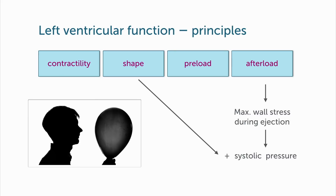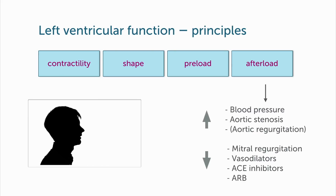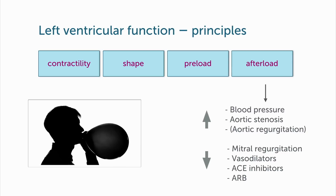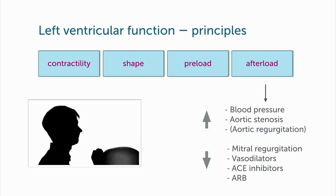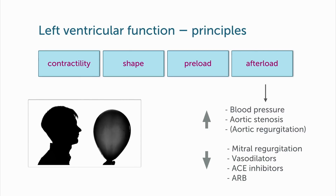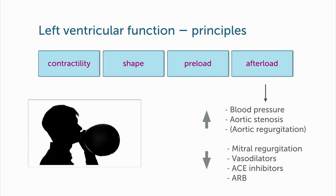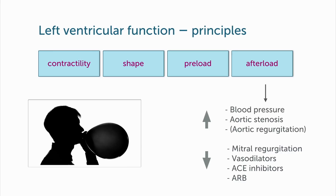Afterload is also influenced by systolic blood pressure. For example, if you have a patient who is hypertensive, then the afterload is increased. The same is true for patients who have aortic stenosis, and even for patients who have aortic regurgitation — there will also be at least some degree of an increase in afterload. But there are also conditions where afterload is decreased, for example in mitral regurgitation, or if drugs are given such as vasodilators, ACE inhibitors, or angiotensin receptor blockers.